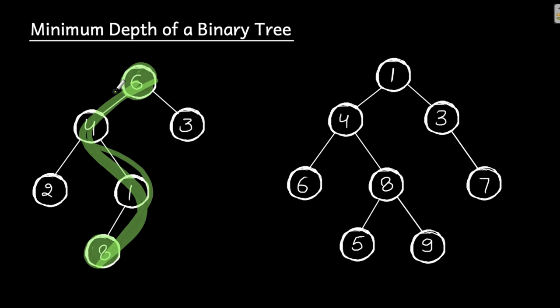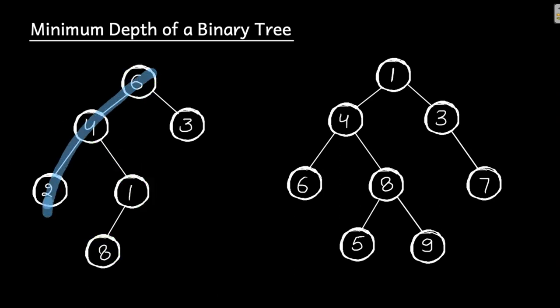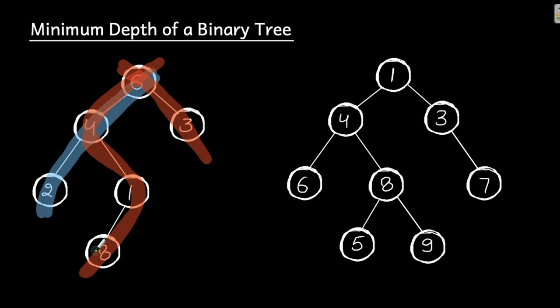Now, minimum depth means we need to consider all the root-to-leaf paths, and whichever is the shortest, that is going to be my minimum depth. For example, if I consider all the root-to-leaf paths in this particular tree — this is one path, this is another path, this is another path, and this is another path from root to leaf.